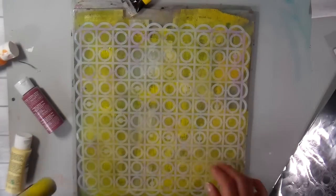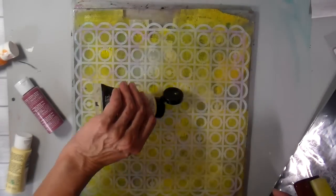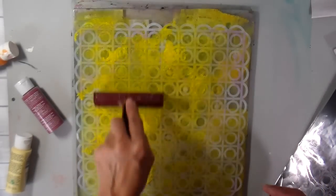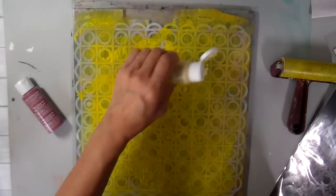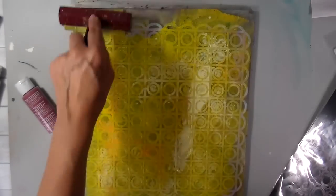Using a brayer to spread that out on my jelly plate. I'm using the 12 inch by 14 inch jelly plate for this. I like the larger one when I'm adding these backgrounds to fabrics.